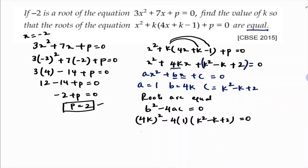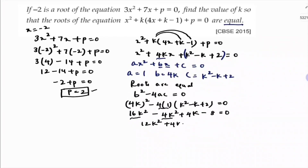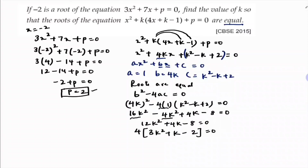Expanding: (4k)² = 16k². Then minus 4 × (k² minus k + 2) = minus 4k² + 4k minus 8. So we get 16k² minus 4k² + 4k minus 8 = 0, which simplifies to 12k² + 4k minus 8 = 0. Taking 4 as a common factor gives 3k² + k minus 2 = 0.